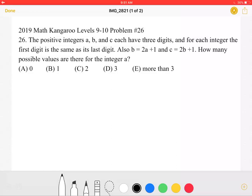The positive integers A, B, and C each have three digits, and for each integer, the first digit is the same as its last digit. Also, B is equal to 2A plus 1, and C is equal to 2B plus 1. How many possible values are there for the integer A? A, 0; B, 1; C, 2; D, 3; or E, more than 3?